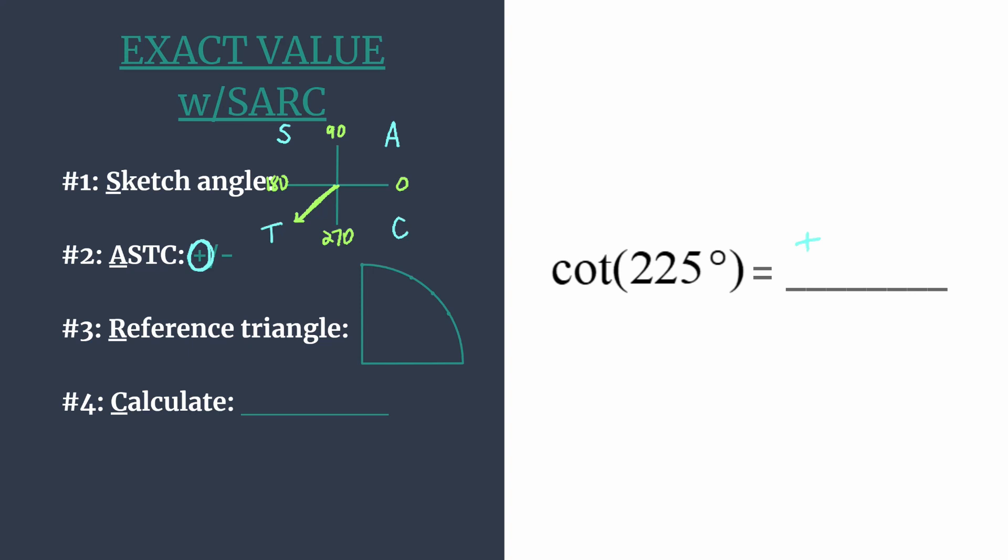Now let's find the reference triangle and coordinates. Our reference angle is just this angle formed by the terminal side of our angle and the x-axis. So that's 225 degrees but then less 180. So 225 minus 180 is 45 degrees and that's our reference angle.